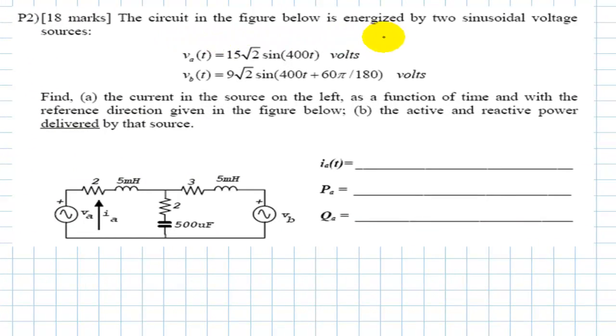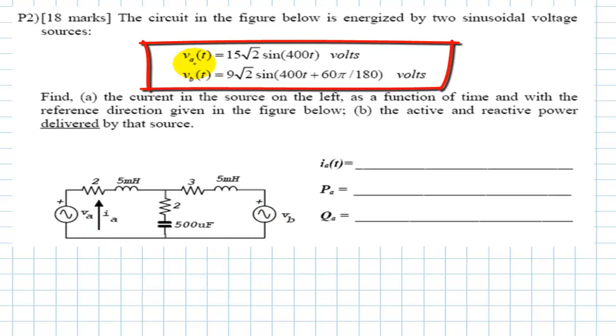The circuit in the figure below is energized by two sinusoidal voltage sources, Va and Vb. They are given as functions of time: Va is 15√2 sin(400t) volts and Vb is 9√2 sin(400t + 60π/180) volts.